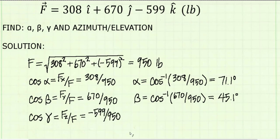And last, the cosine of gamma is equal to the z component of the force divided by the magnitude. Solving for gamma, we get 129.1 degrees.